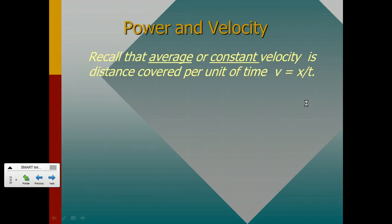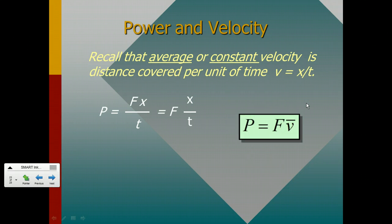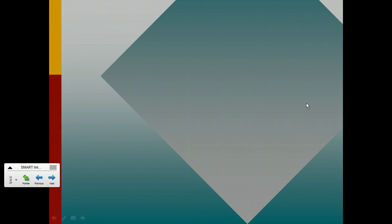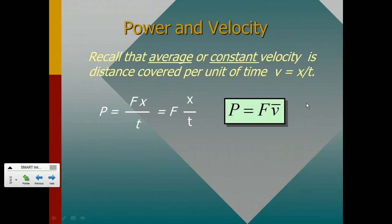We do know that the average or constant velocity is distance covered by some object per unit of time, and so we can see then that when we talk about our power as our work, which is F times x, where x is the distance that we move through, divided by time, this x over time, remember, is just our velocity.